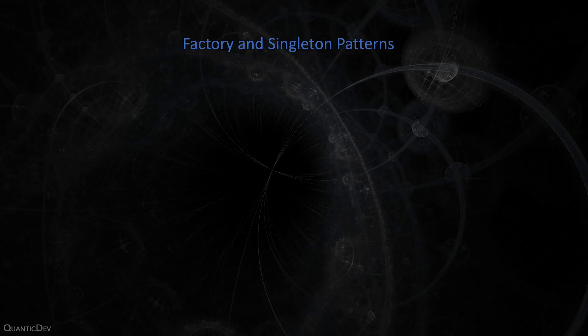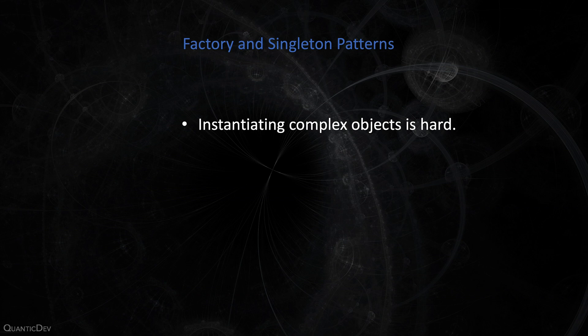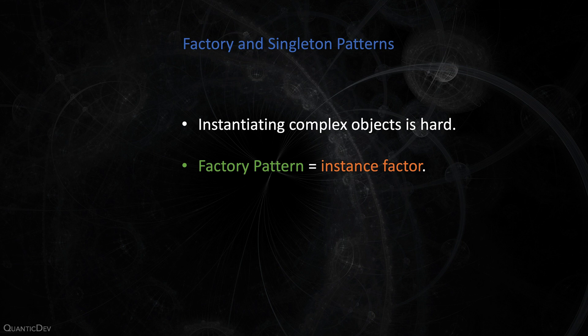13. Factory and Singleton Pattern. Once your objects and their constructors become sufficiently complex, creating instances of them will be a pain — you will have to know which dependencies they need every time you need to initialize them. After the constructor changes, you will have to change it everywhere. Instead, you can utilize the factory pattern and let the factory object construct any class you need.